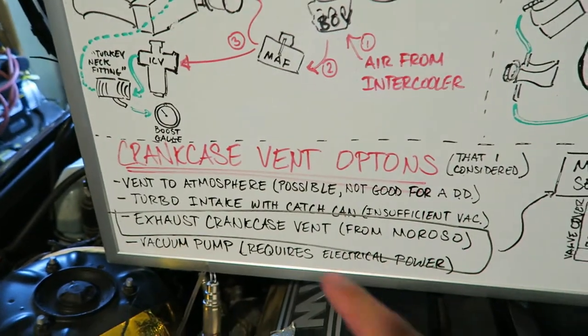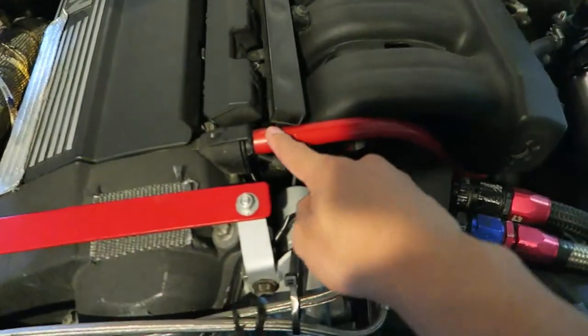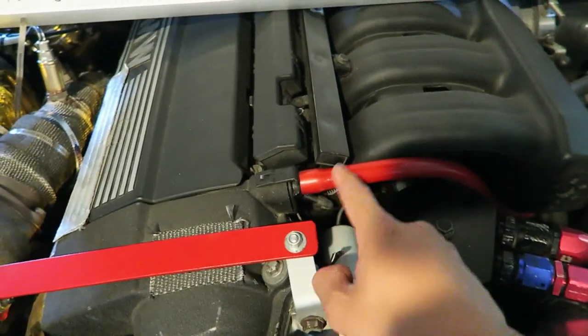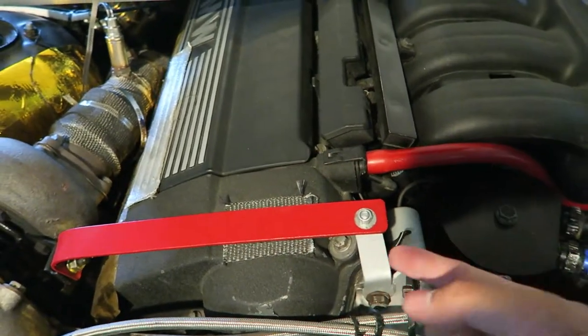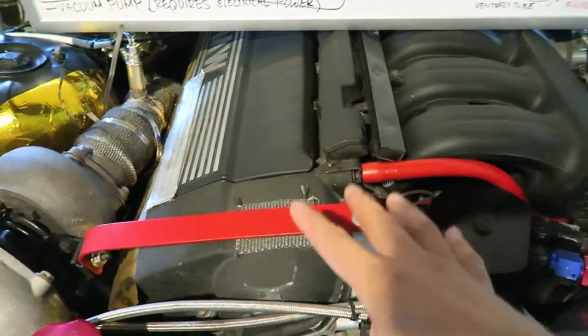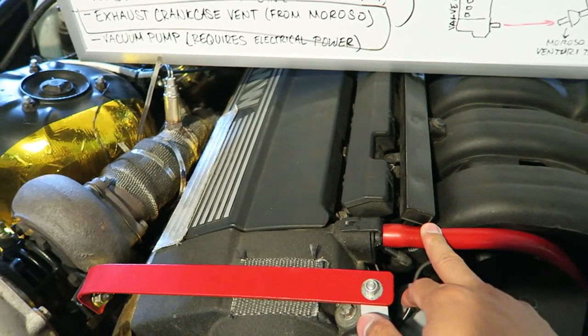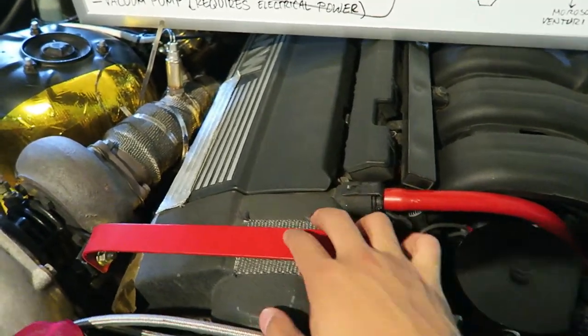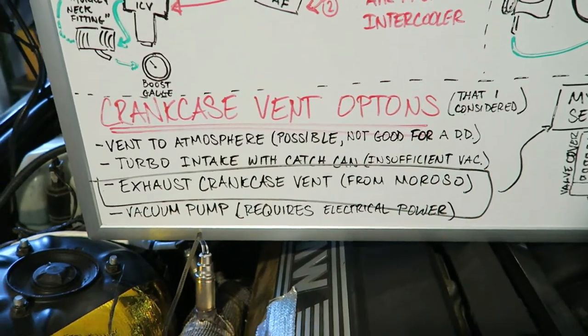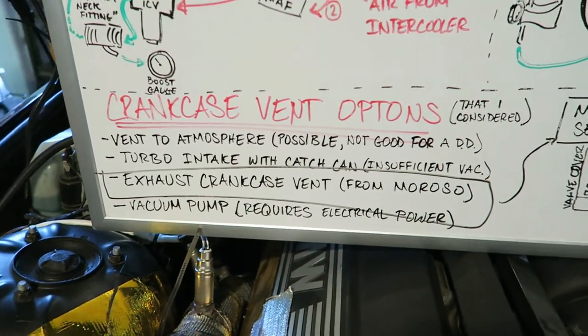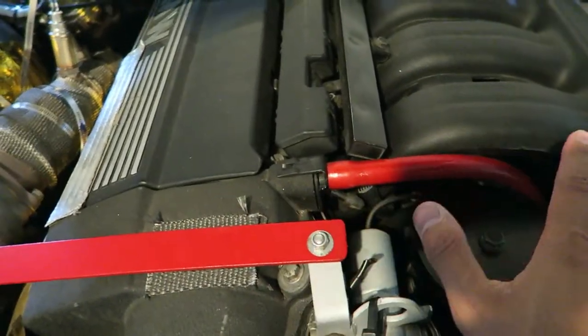One of the biggest questions I get is the crankcase vent options from the valve cover itself. Stock, this would be hooked up somewhere into the intake plumbing so that it pulls a vacuum from this crankcase and pulls out the excess oil vapors that pressurize as the motor is running normally. So you got a couple options you can do to relocate this vacuum source. The first one would be vent to atmosphere—possible, but it's not good for a daily driver because the stock system and the stock ECU will quantify this as a vacuum leak potentially if you just choose to vent it to atmosphere.